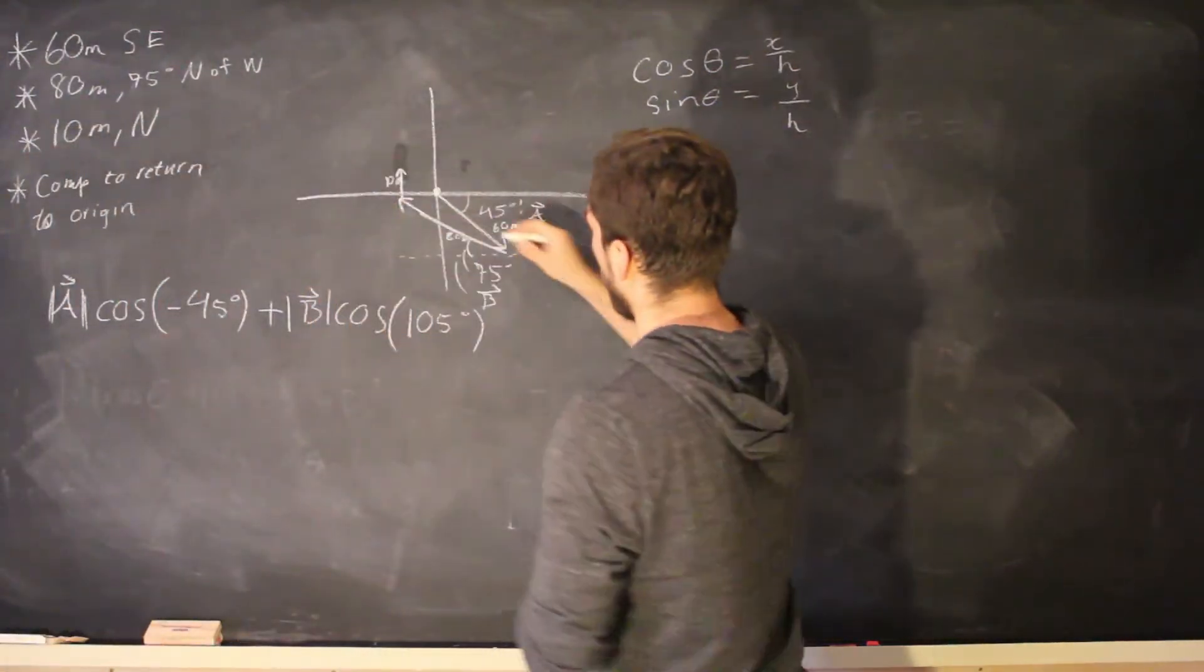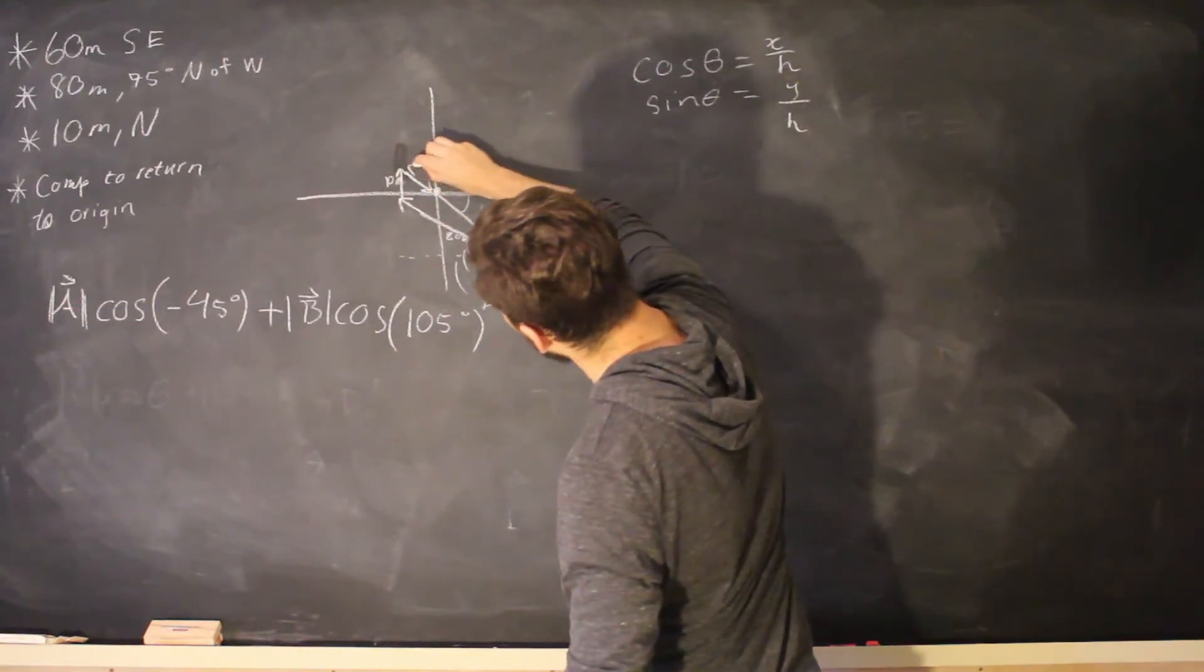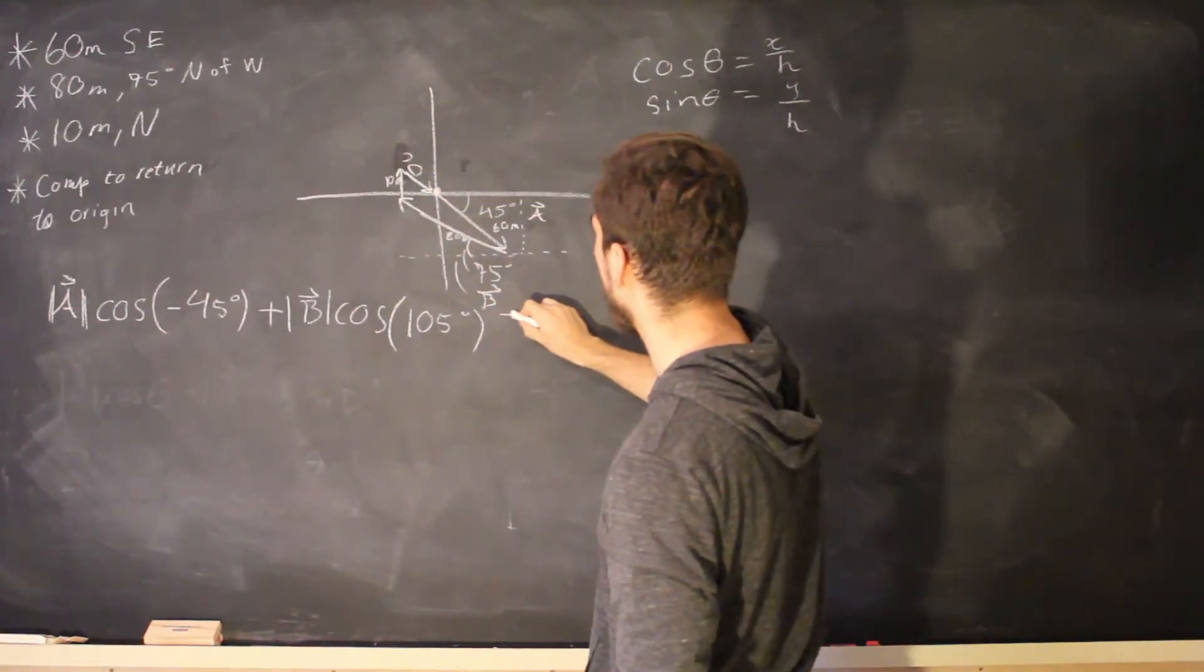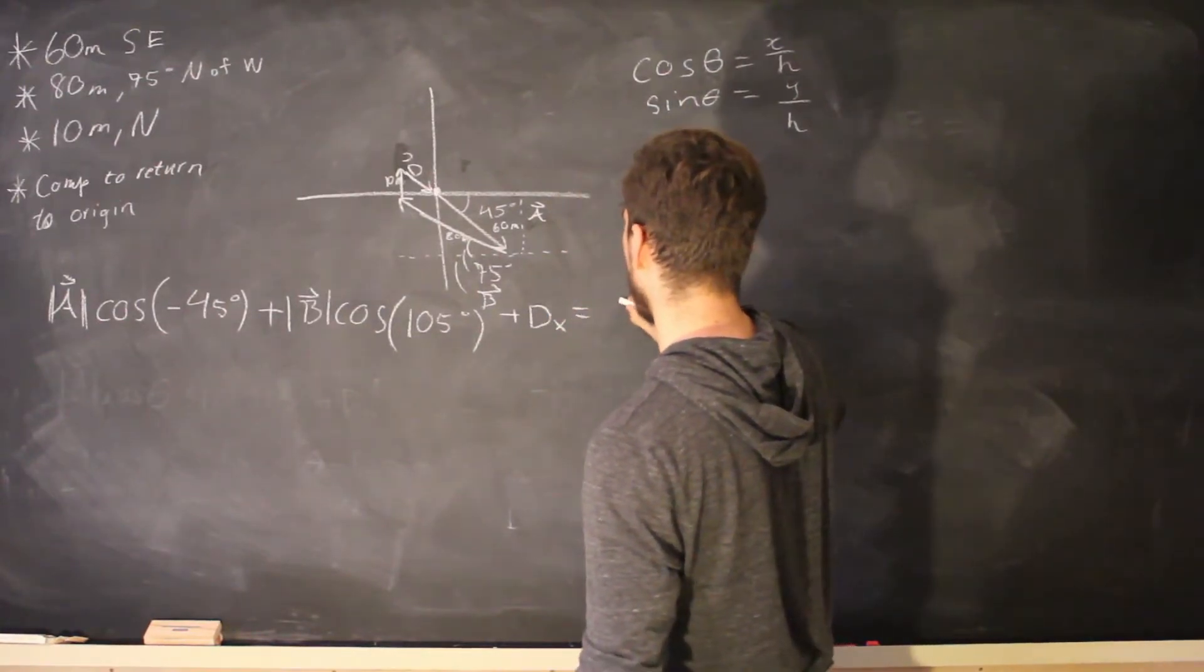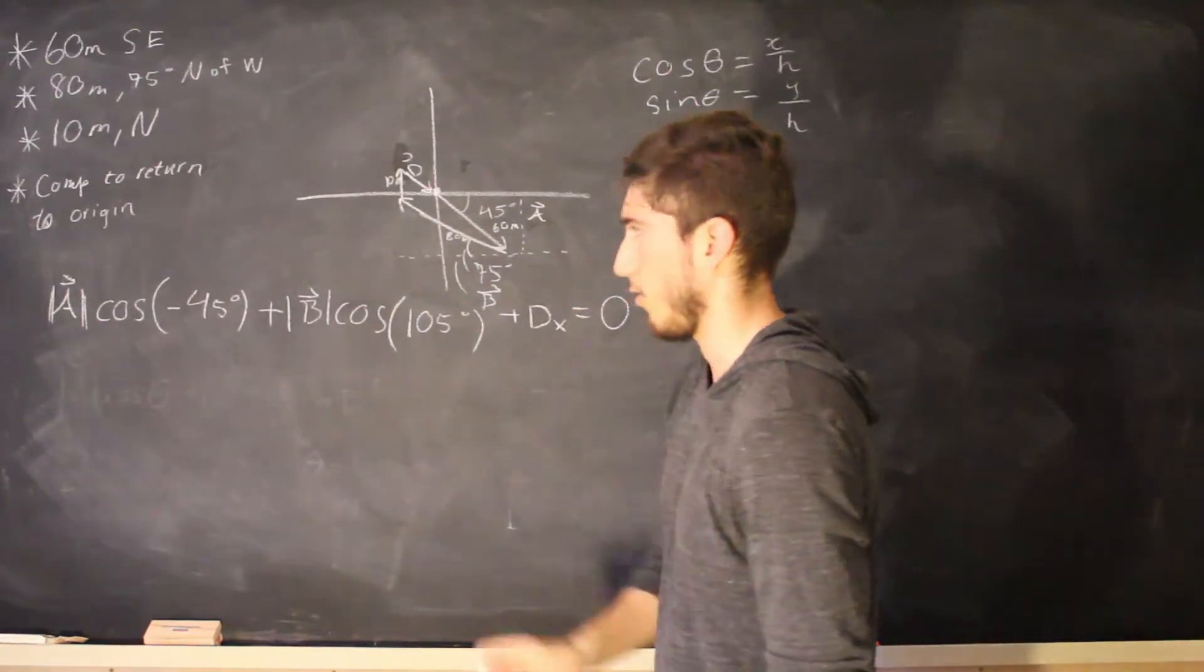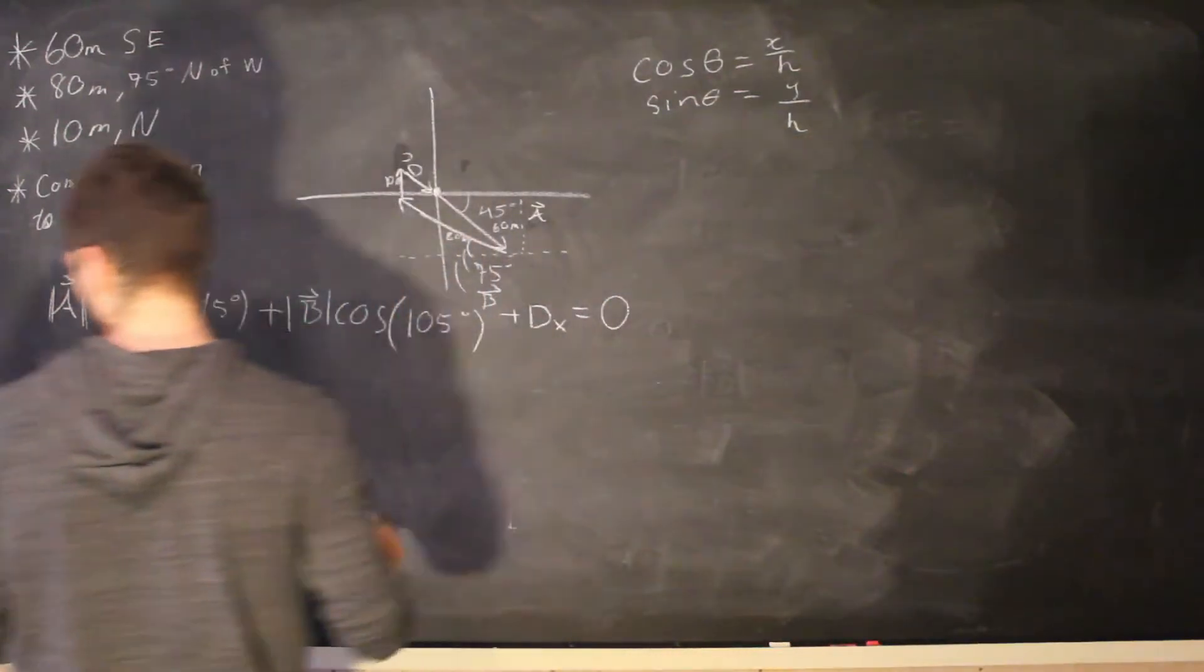But we do have to worry about this new vector that we want to make. We'll just call it vector d. So we're going to add the x component of d and we want this equal to zero. We want everything to cancel out. So let's do this calculation first.